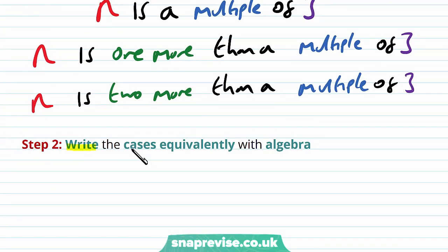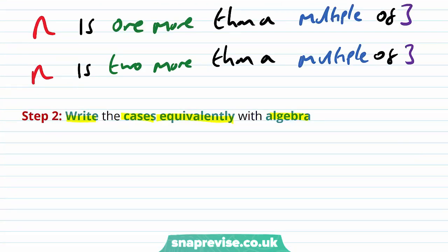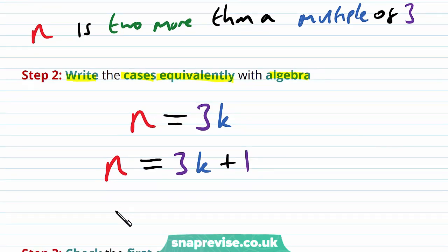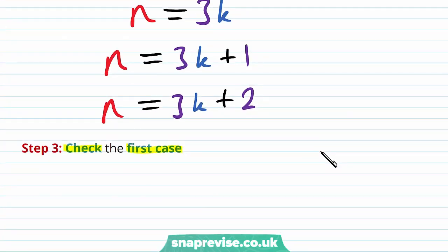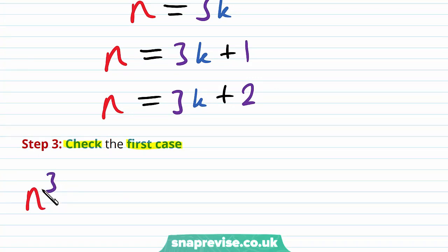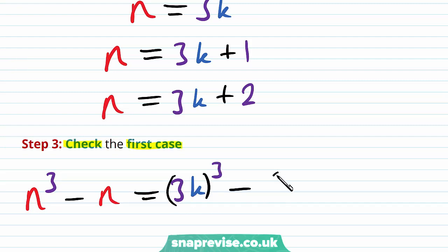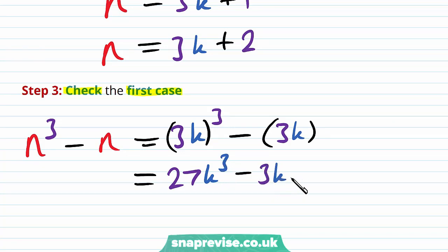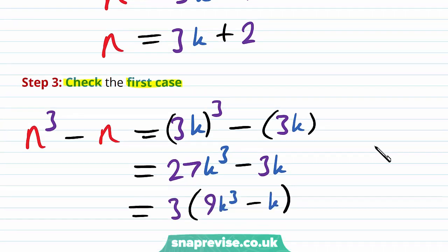We write the cases algebraically. Case 1: n = 3k (n is a multiple of 3). Case 2: n = 3k + 1 (n is one more than a multiple of 3). For case 1: n³ − n = (3k)³ − 3k = 27k³ − 3k = 3(9k³ − k), which is certainly a multiple of 3. For case 2: n³ − n = (3k+1)³ − (3k+1). Expanding: 27k³ + 27k² + 9k + 1 − 3k − 1 = 3(9k³ + 9k² + 2k), which is a multiple of 3.